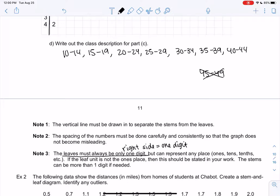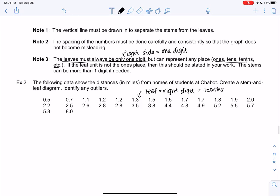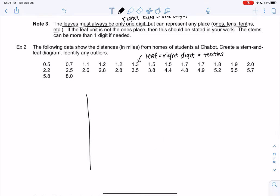And then the leaves are always only one digit. So the right side is one digit. Sometimes we have numbers that are more than two digits, and so it's okay for the stem to have more. And so it doesn't have to be the ones place. We'll see in the next example it can be any place value. And then the stems can be any other. So on this next example, my leaf will have to be tenths. So the leaf is always the right digit, which is the tenths place here.